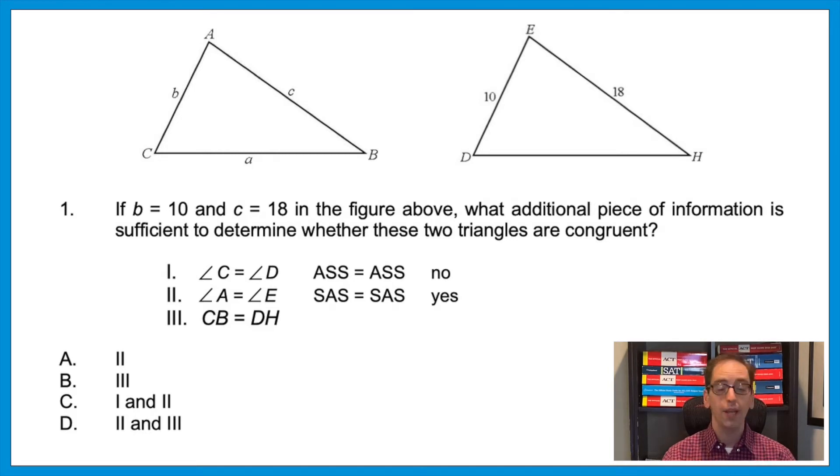And now let's think about statement three. Statement three says that side CB equals side DH. That means all three sides on the left equal all three sides on the right, so SSS equals SSS, and that works—side-side-side does work for congruence. So statements two and three are both true, but one is not. The answer is D.